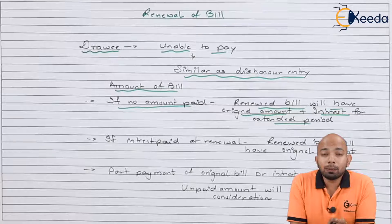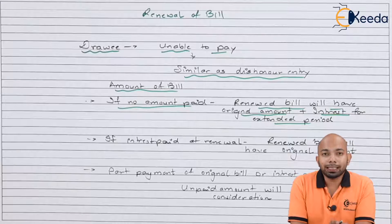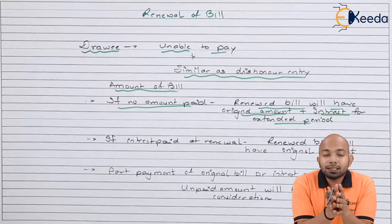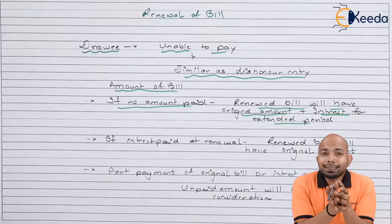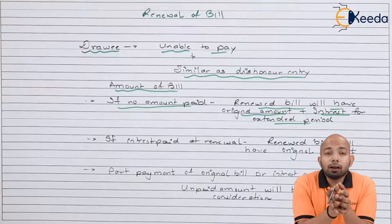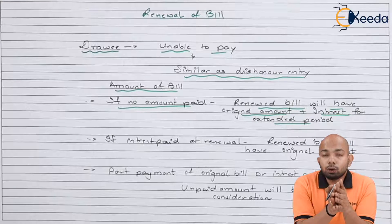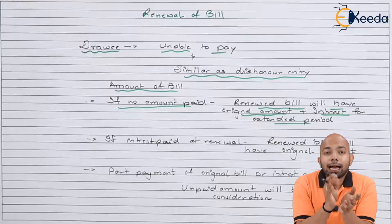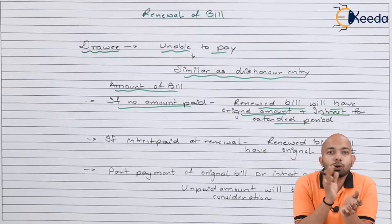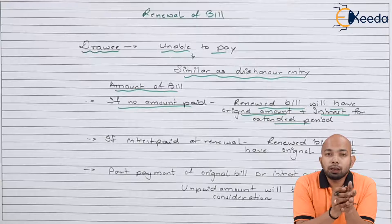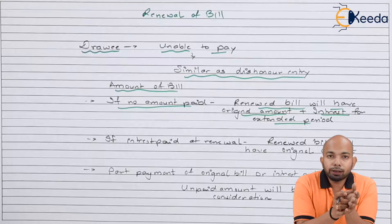Second, if the interest amount is paid at the time of renewal — that means the interest is already paid for the next credit period, meaning a few months taken for the payment of the whole bill — and the interest for that specific amount is already paid at the date of renewal, then in such case only the original amount of the bill will be mentioned in the renewed bill.